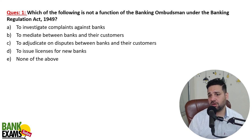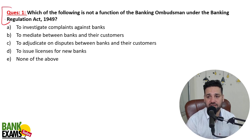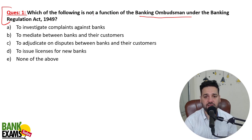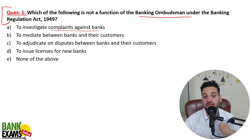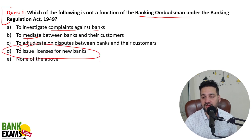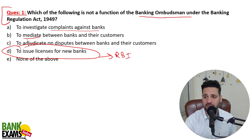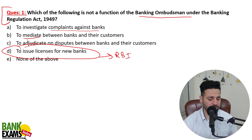Question 1: Which of the following is NOT a function of Banking Ombudsman under the Banking Regulation Act 1949? The Banking Ombudsman does investigate complaints against banks, mediate, and adjudicate disputes — but it does NOT issue licenses for new banks. Issuing licenses is done by RBI, although Banking Ombudsman operates under RBI. Issuing a license is not a function under the Banking Ombudsman scheme.